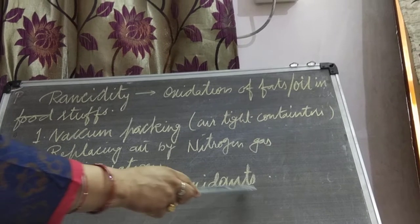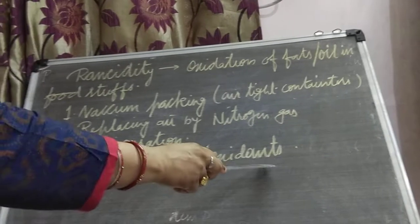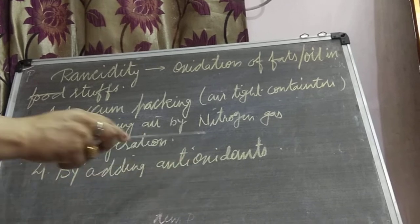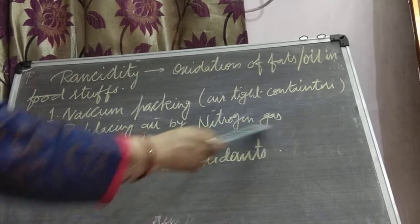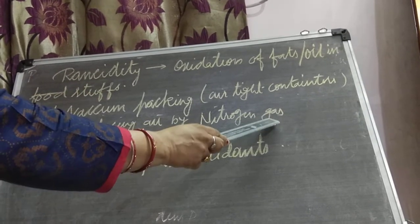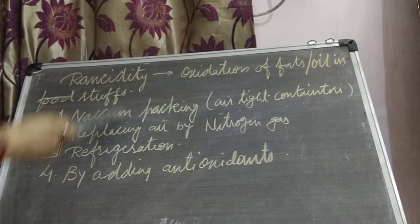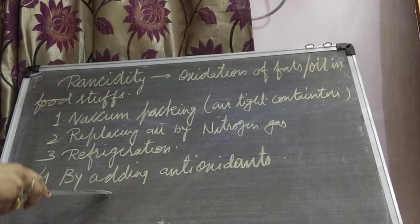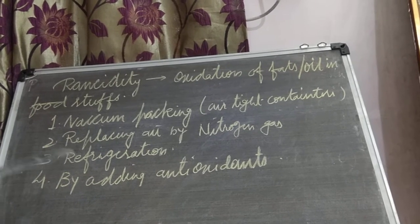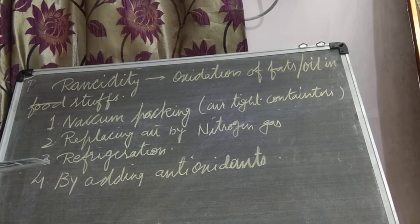Another method is adding antioxidants. Natural antioxidants like Vitamin C and Vitamin E prevent food from getting rancid. The key substance to remember for preventing rancidity is Nitrogen gas. With that, we have completed this chapter. Do all the NCERT questions, upload any difficulties, and extra questions will also be uploaded. Thank you.